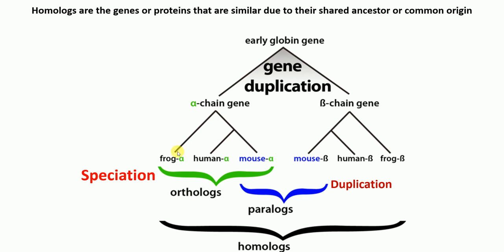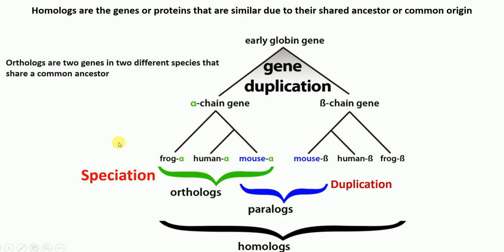So what are orthologs? The alpha chain gene found in frog, human, and mouse is called an ortholog, and this occurs because of a speciation event. Orthologs are two genes or proteins in two different species that share a common ancestor. For example, human alpha and frog alpha are orthologs, and human alpha and mouse alpha are also orthologs.